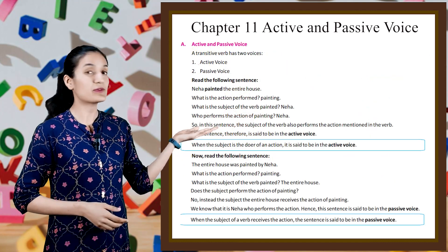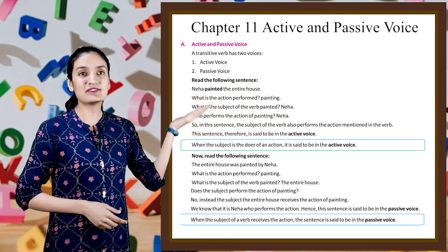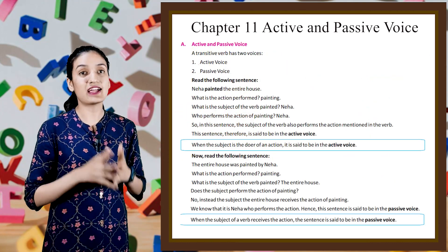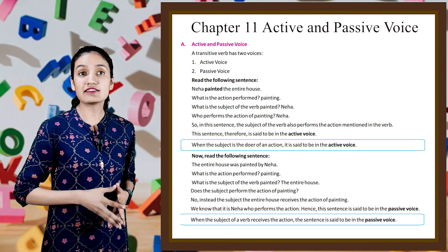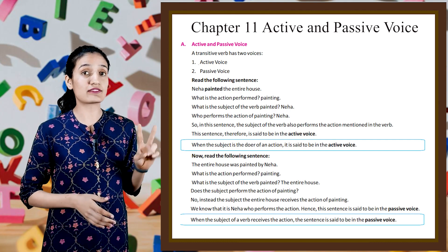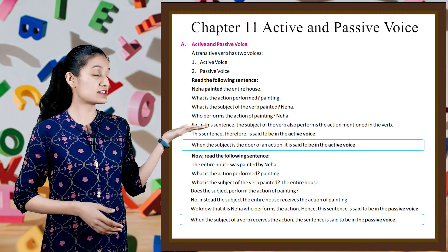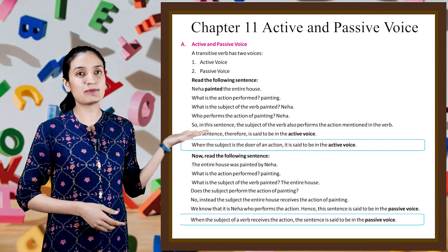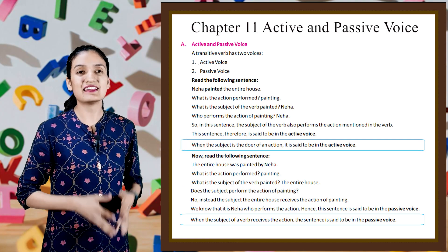Now let's begin with part B, active and passive voice. A transitive verb has two voices: first, active voice; second, passive voice.